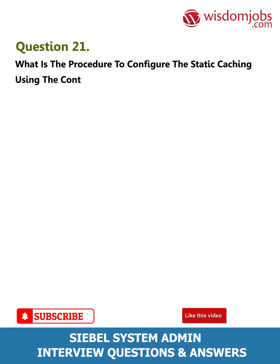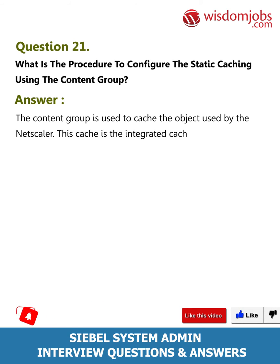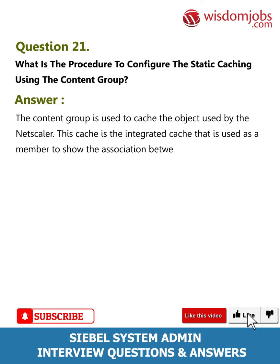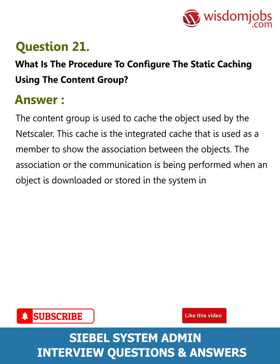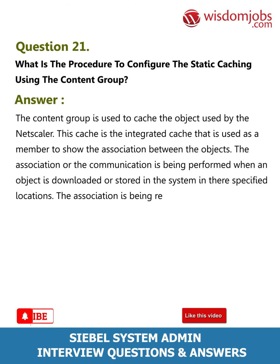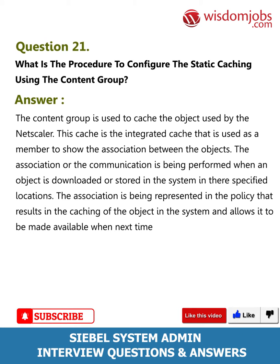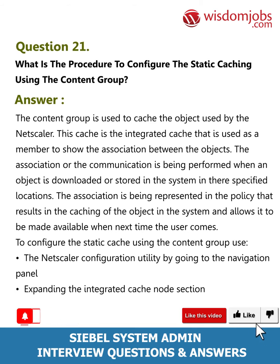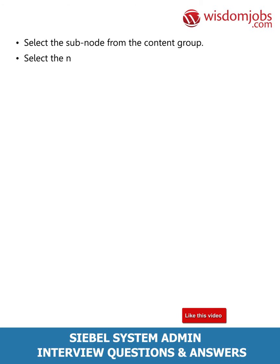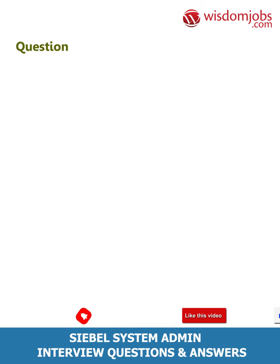Question 21: What is the procedure to configure static caching using the content group? Answer: The content group is used to cache objects used by NetScaler. This integrated cache shows the association between objects, performed when an object is downloaded or stored in its specified location. To configure the static cache using the content group, use the NetScaler configuration utility, navigate to the navigation panel, expand the integrated cache node section, select the sub-node from the content group, select the name of the node, and add the image of the average size.